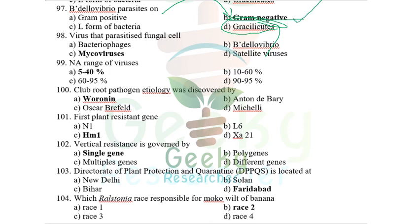Mycoviruses are viruses that parasitize fungal cells — 'myco' means fungus. Mycoviruses were first discovered by Safferman and Morris in 1963.